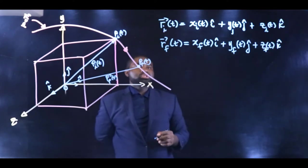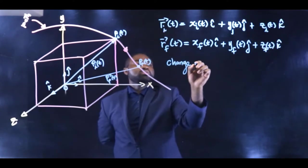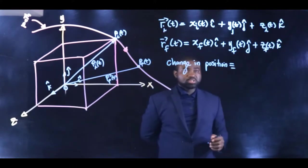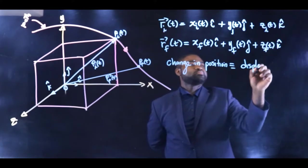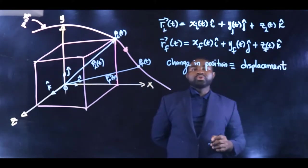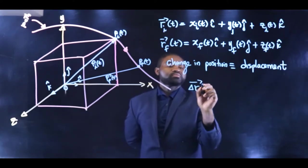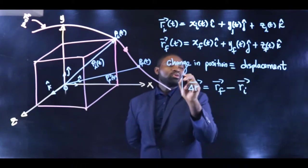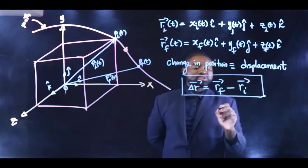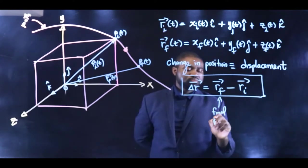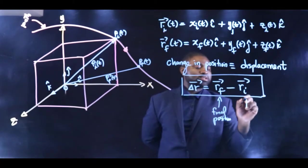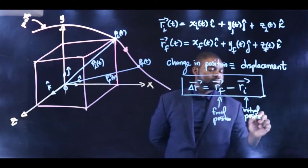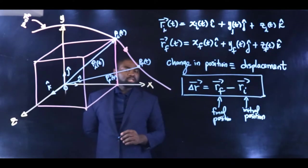The change in position defines what we call displacement. In other words, the displacement of an object, ΔR, is simply the final position minus the initial position.